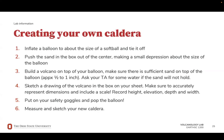Procedure and worksheets are available for download on Carmen, but you can also bring these as a physical supply. You will need to use Google Earth for this lab; all KMZ files are available on the instruction page on Carmen. Here are the lab procedure steps: First, inflate the balloon to about the size of a softball and tie it off. Then, push the sand in the box out of the center, making a small depression about the size of the balloon. Next, build a volcano on top of your balloon, making sure there is sufficient sand on top — approximately half to one inch. Ask your TA for some water if the sand will not hold on its own. Sketch a drawing of the volcano in the box on your sheet, making sure to accurately represent dimensions and include a scale. Record the height, elevation, depth, and width. Make sure you put on your safety goggles before you pop the balloon. After the collapse, measure and sketch your new caldera.